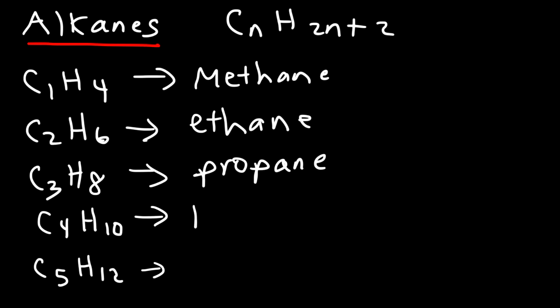C4H10, if you have four carbons, it's going to be called butane. And C5H12 is pentane. C6H14 is hexane. C7H16 is heptane. C8H18 is octane. C9H20 is nonane. And C10H22 is decane.